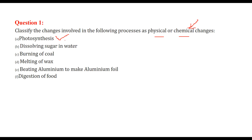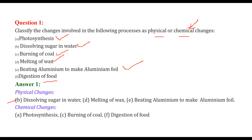Photosynthesis is a chemical change. Dissolving sugar in water is a physical change. Burning of coal is a chemical change. Melting of wax is a physical change. Beating aluminium to make aluminium foil is a physical change. Digestion of food - because the composition is changed, what you intake is not what comes out entirely - it is a chemical change. So physical changes are: dissolving sugar in water, melting of wax, and beating aluminium to make aluminium foil. Chemical changes are: photosynthesis, burning of coal, and digestion of food.